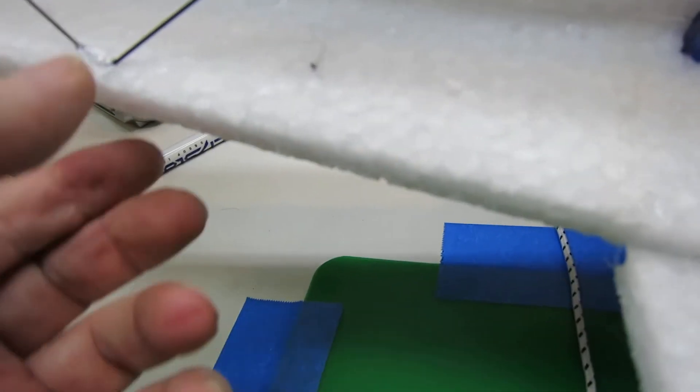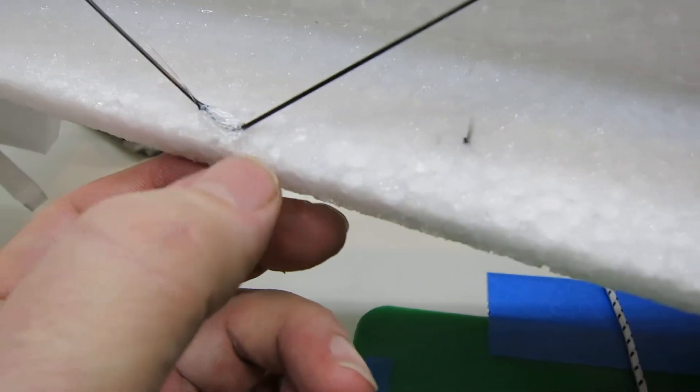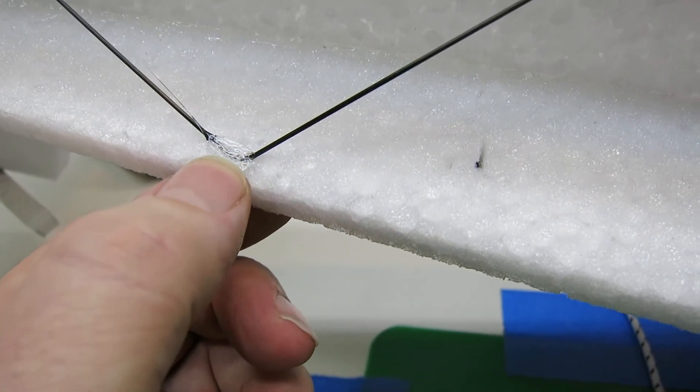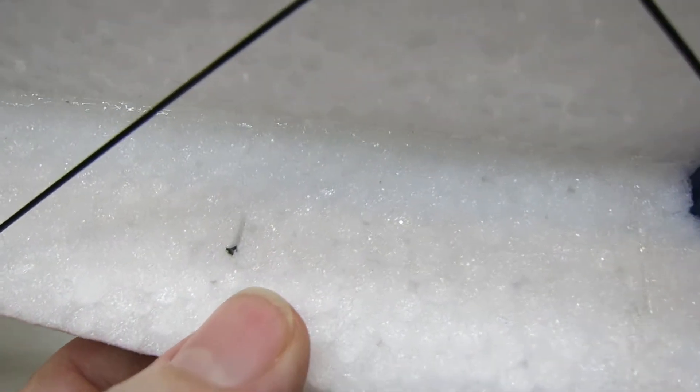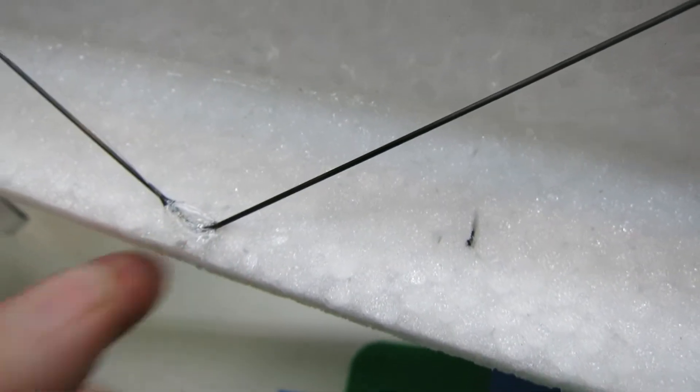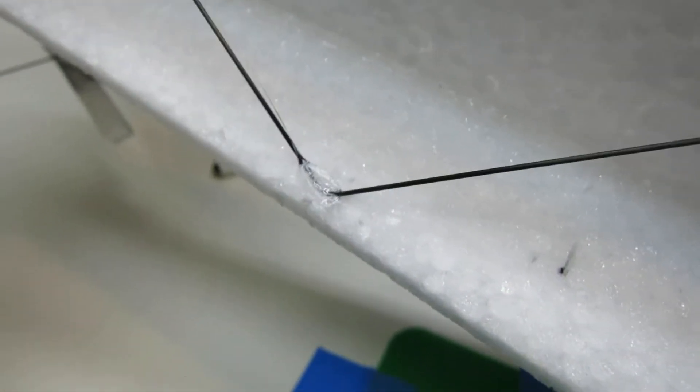And you can see here, there were some slots pre-cut in this store bought model. But if you're doing your own, you can see you just cut a little slot like that and put the CF Rod in.